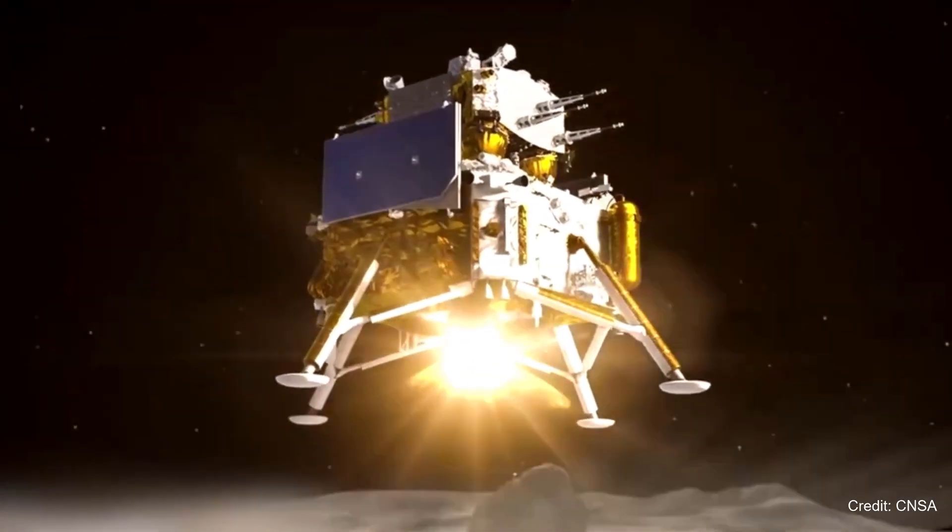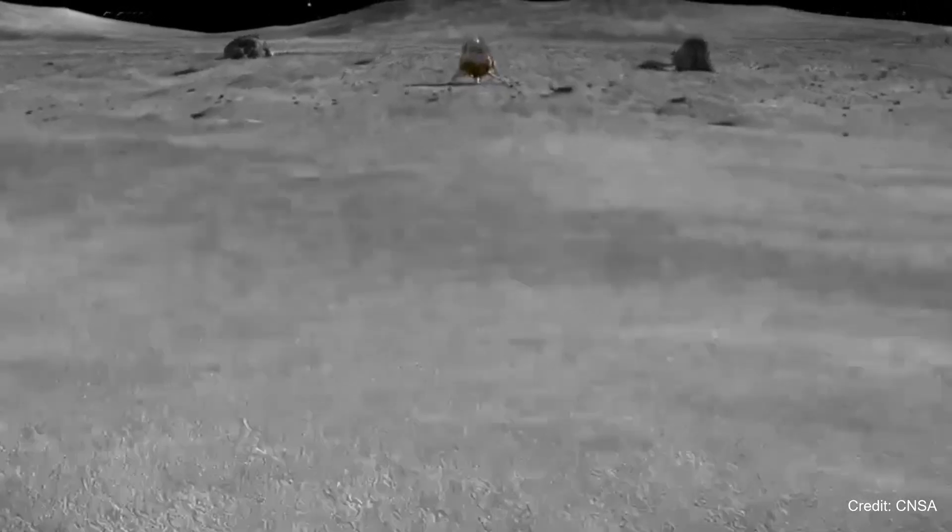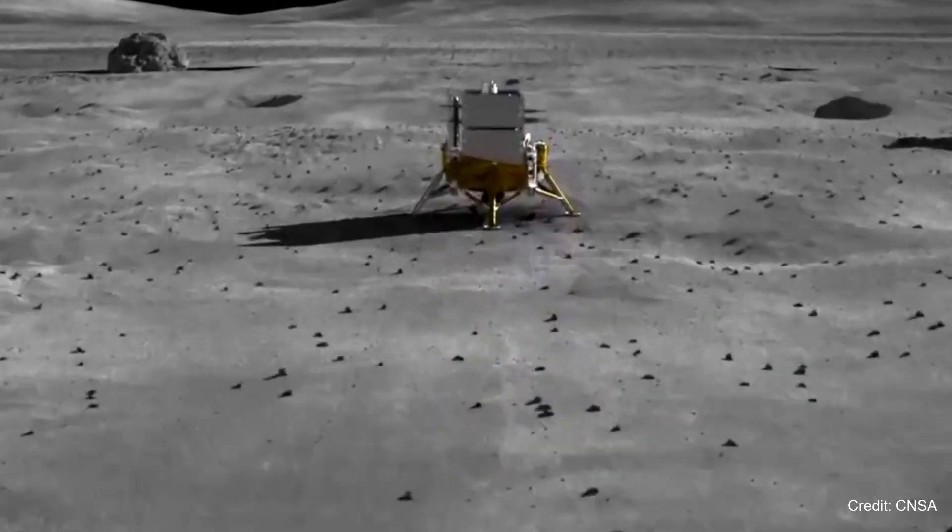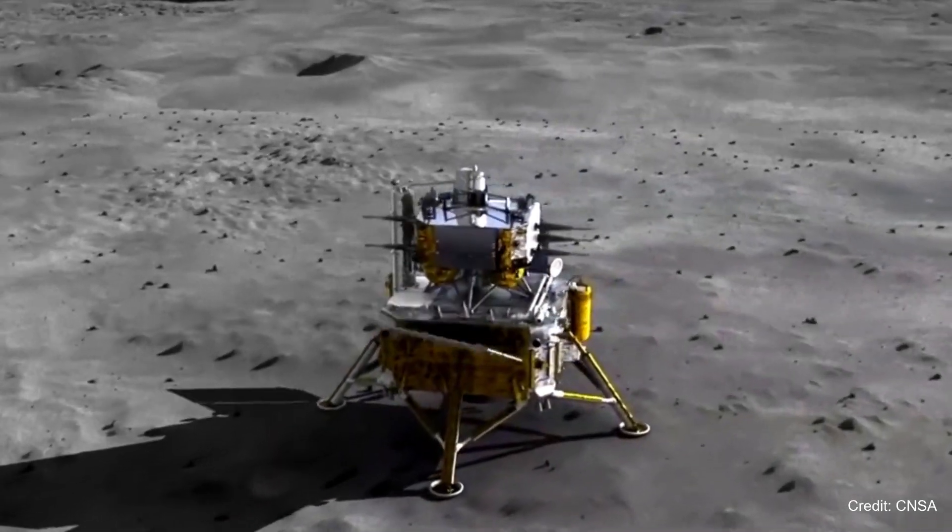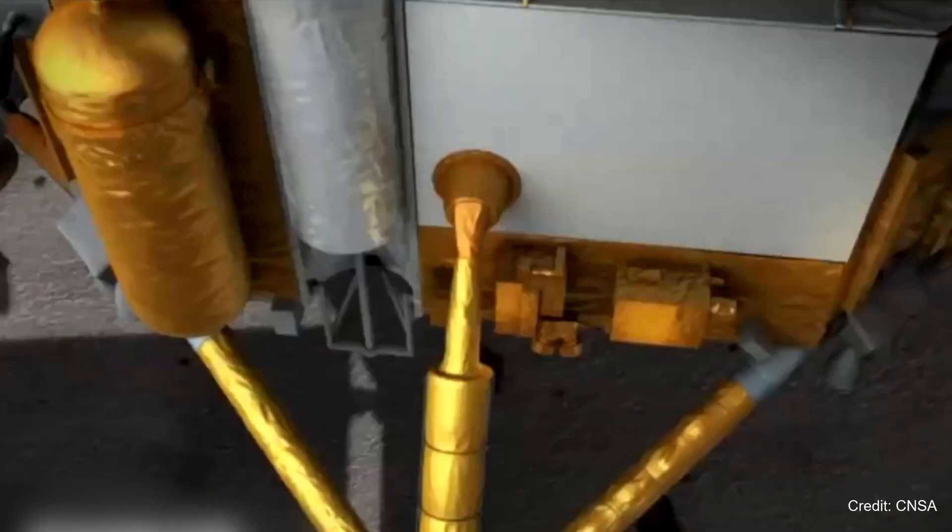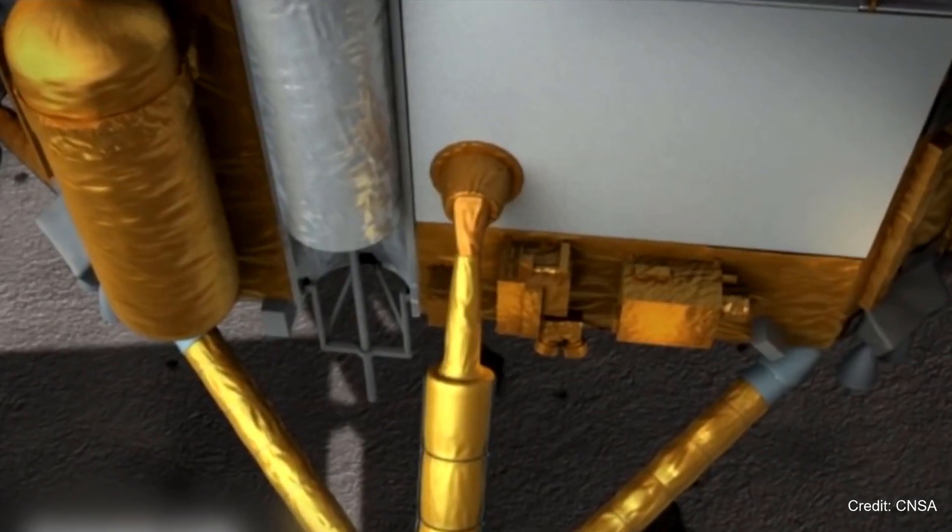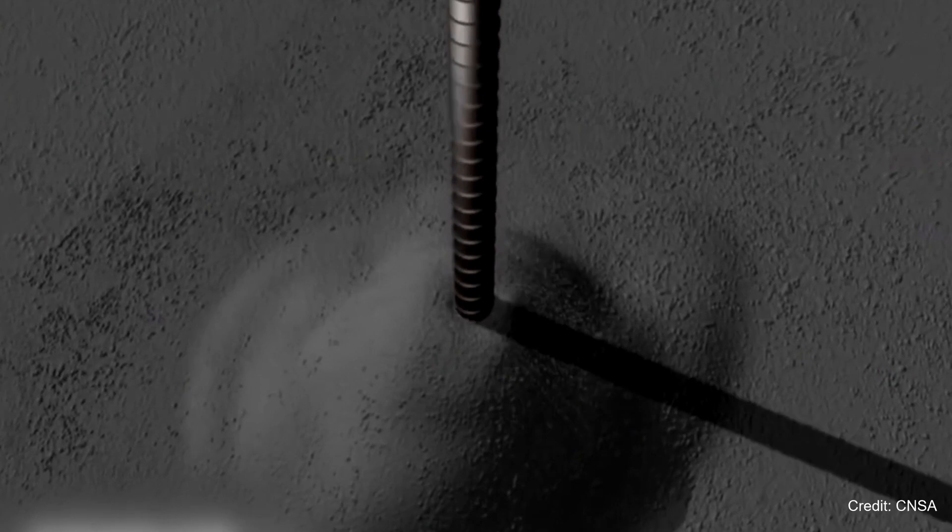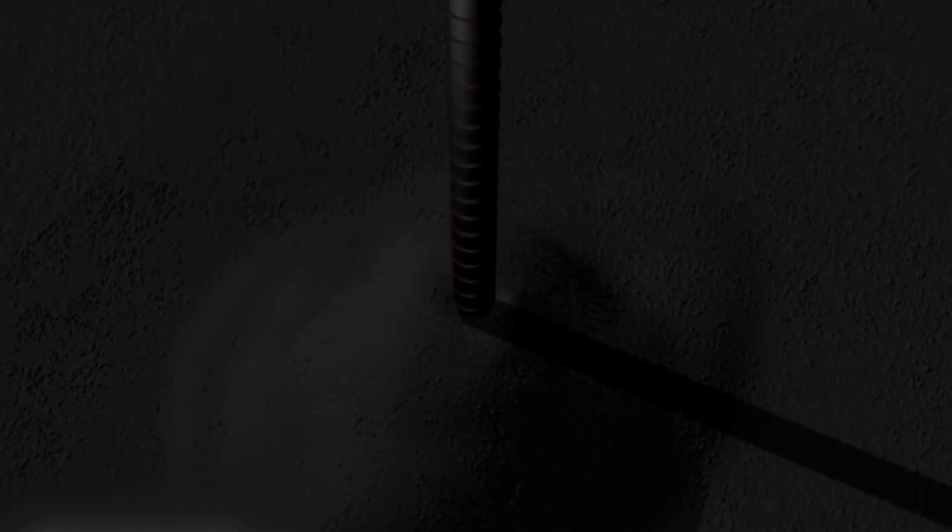Now, over 13 years later, spacecraft landers and rovers are still adding new data to this knowledge pool. The Chinese lander, Chang'e 5, sent by CNSA, made the first measurement of water in the lunar soil from the lunar surface.